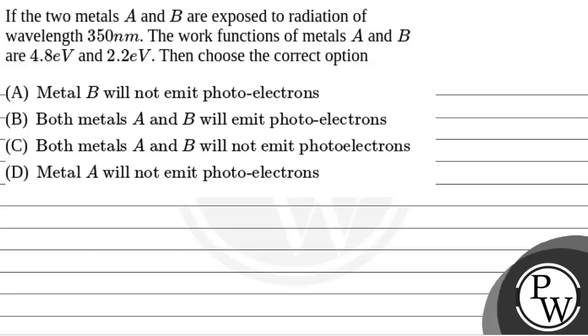Let's read the question. The question says that if the two metals A and B are exposed to radiation of wavelength 350 nanometer, the work functions of metals A and B are 4.8 electron volt and 2.2 electron volt. Then choose the correct option.